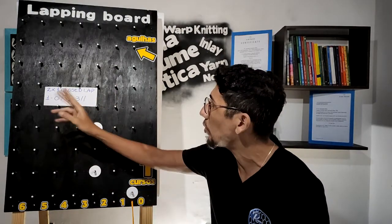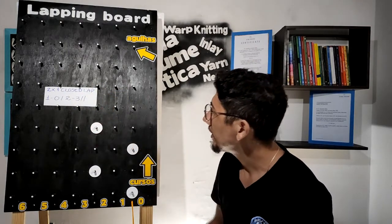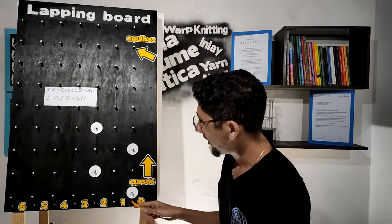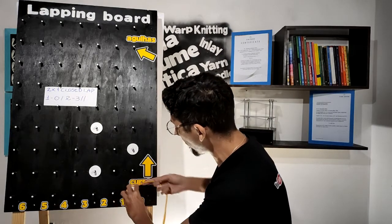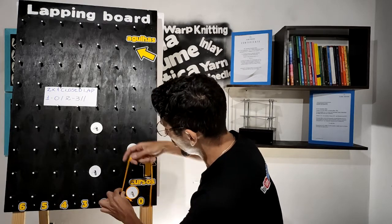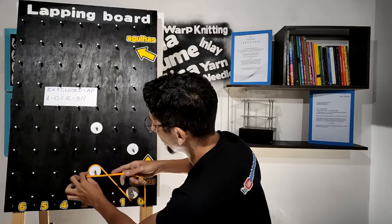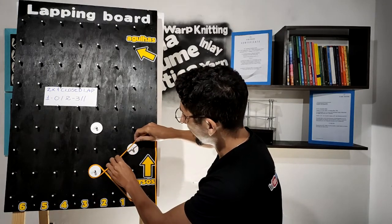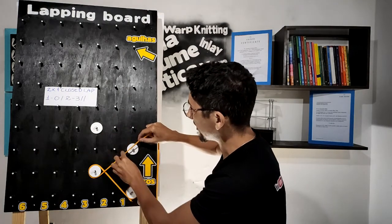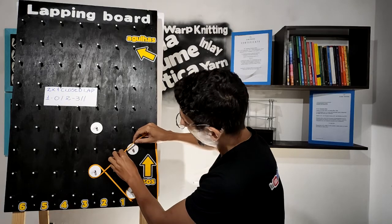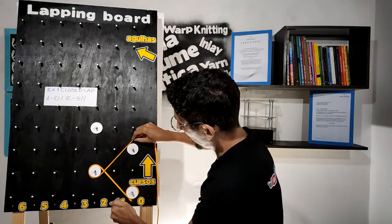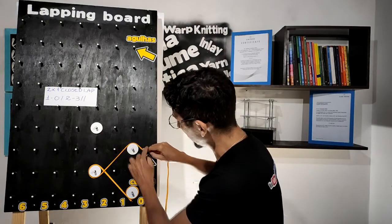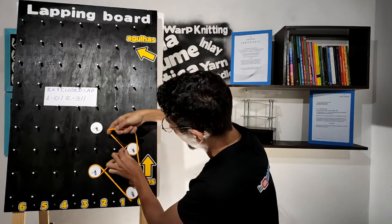The two-by-one closed lap repeat is one-zero and two-three. Let's do the first repeat: one-zero and two-three. Now we can continue on the next needles. Here we have swinging in on space one, overlap, swinging out on zero-one-zero.